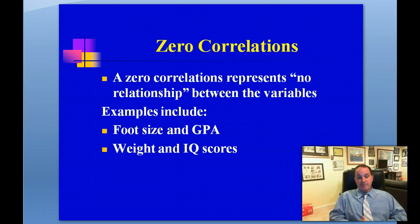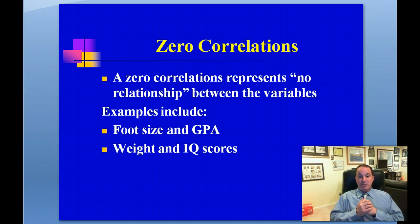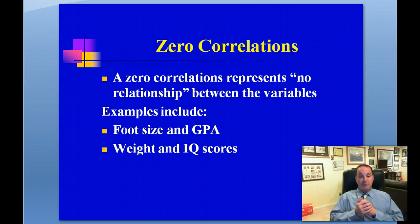Zero correlations represent no relationship between the variables. For example, foot size and GPA — as foot size increases, GPA doesn't change, and the data points would be all over the place. Similarly, weight and IQ score — as weight goes up, IQ scores are unaffected. Whether someone is underweight, average weight, or above average weight, it has no impact on IQ score.